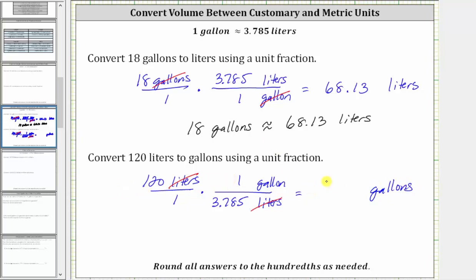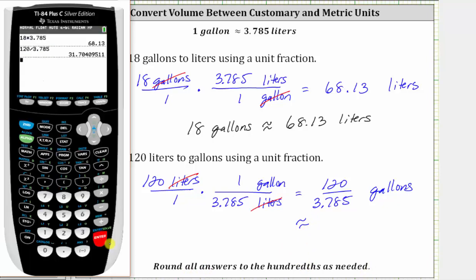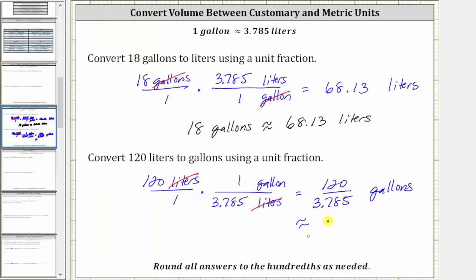Multiplying in the numerator, we have 120. Multiplying in the denominator, we have 3.785. To finish, we do have to find this quotient. We are told to round to the hundredths place value, or two decimal places. Looking at the third decimal place of the quotient, notice how we have a four, which means we round down. This rounds to 31.70, which gives us 31.70 gallons. So 120 liters is approximately 31.70 gallons.